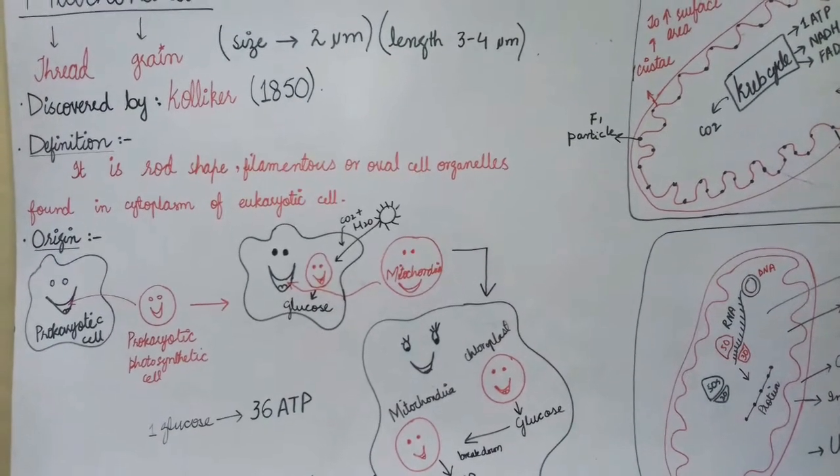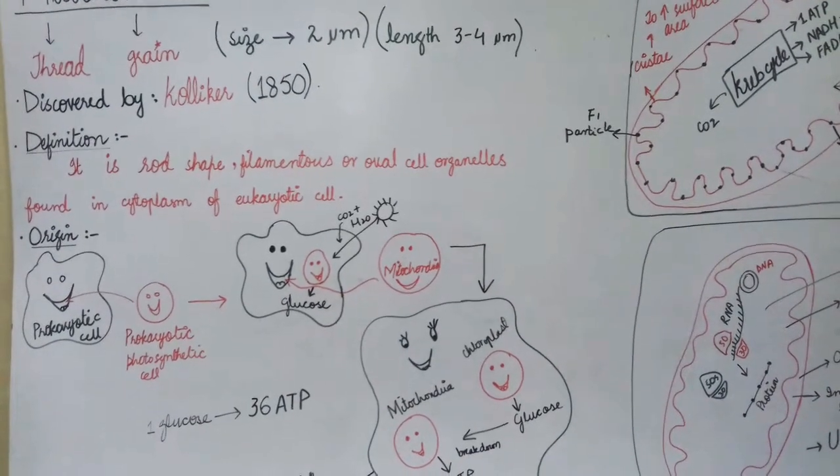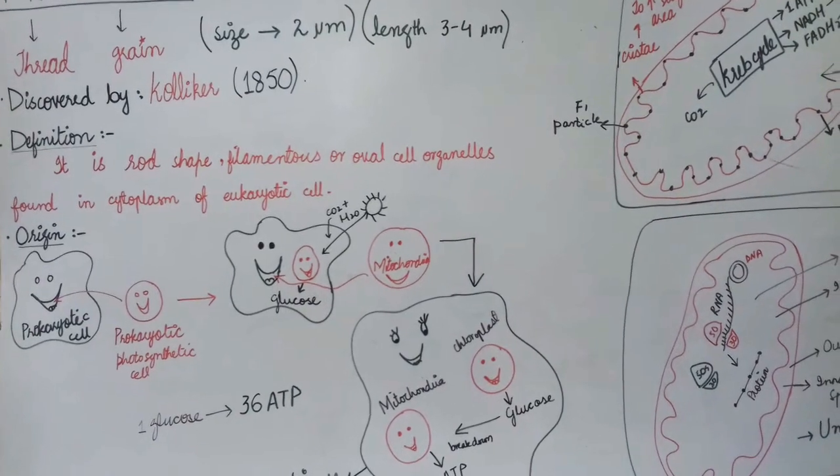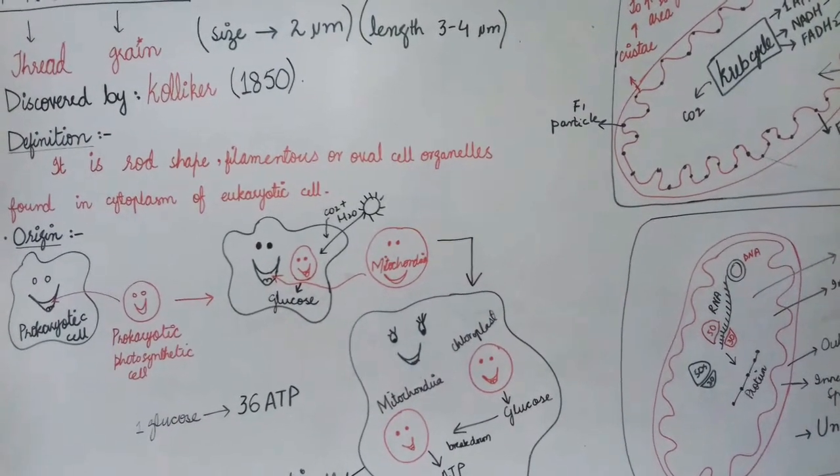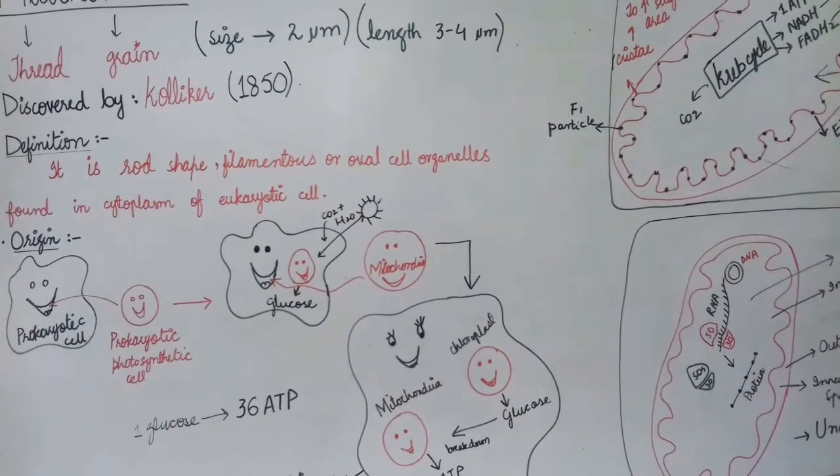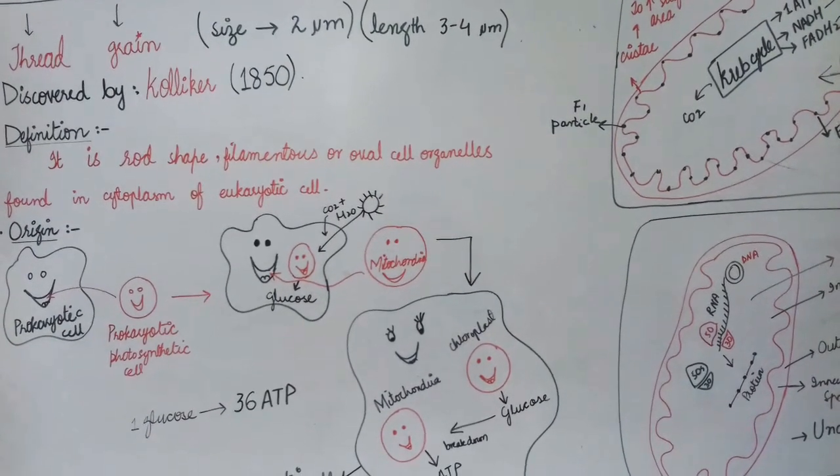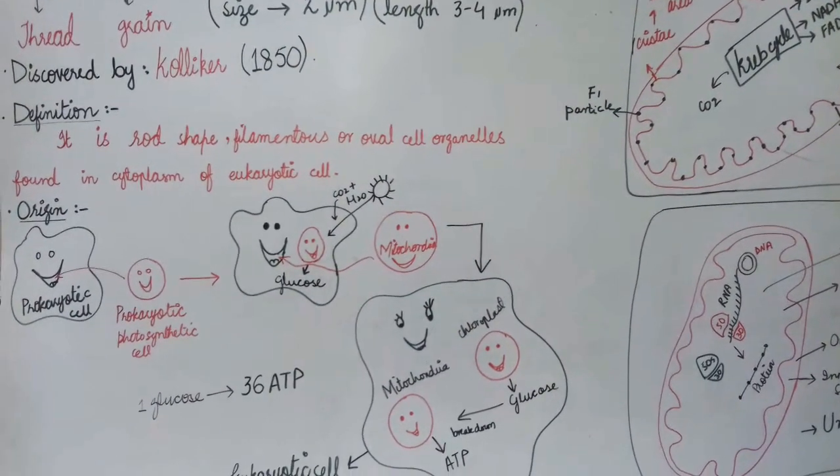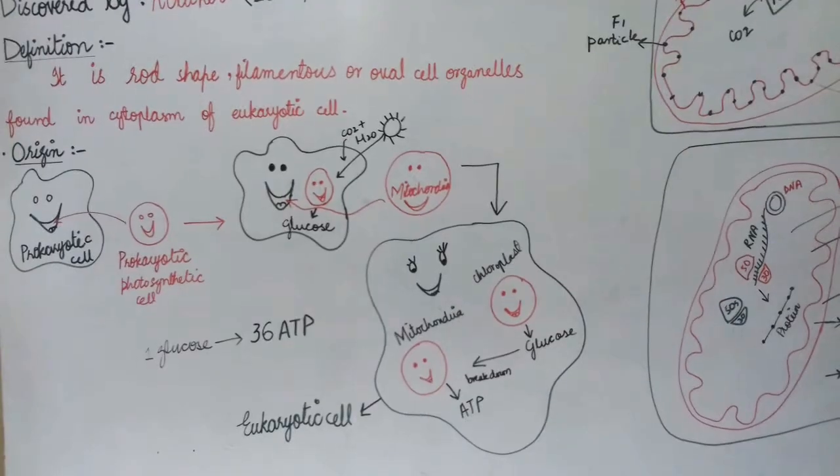The shape varies from cell to cell. In muscle cells, the number is increased and its shape varies, whereas in mature RBCs it is absent completely.